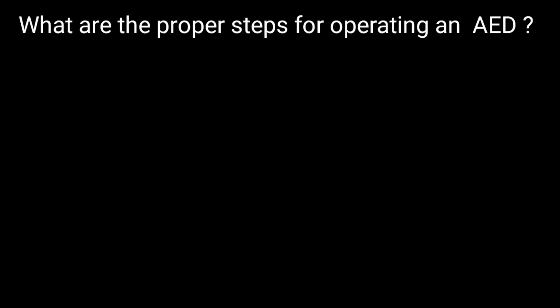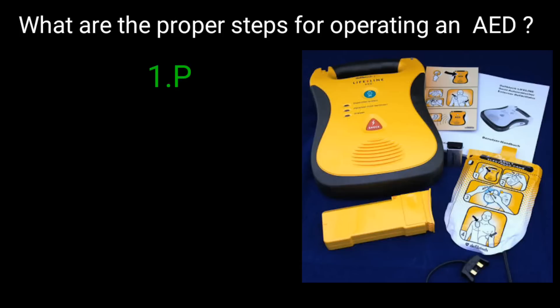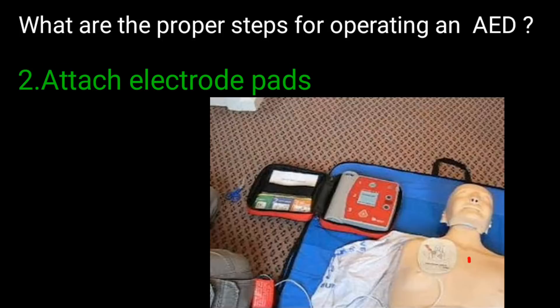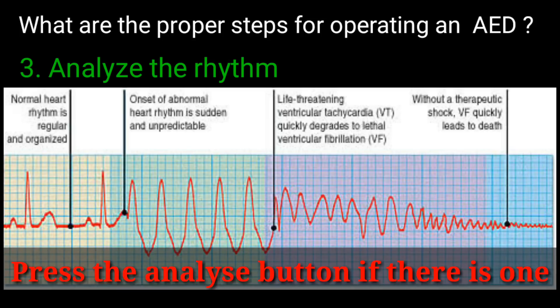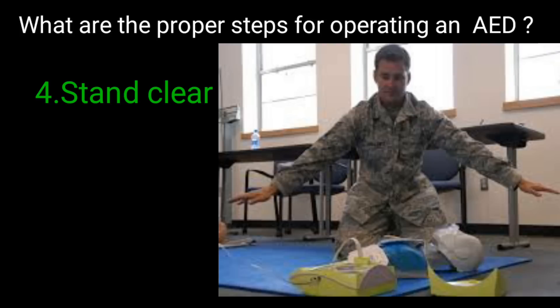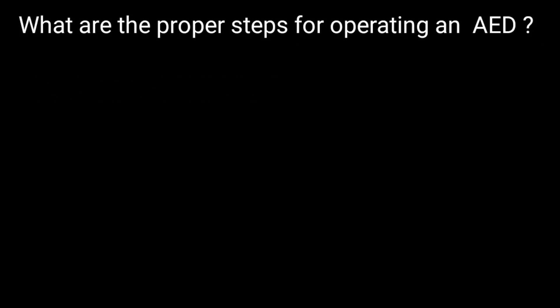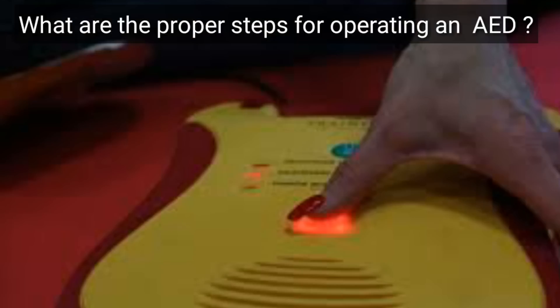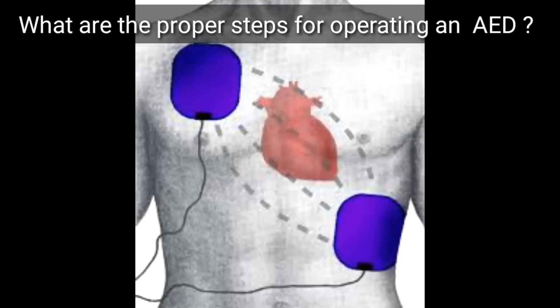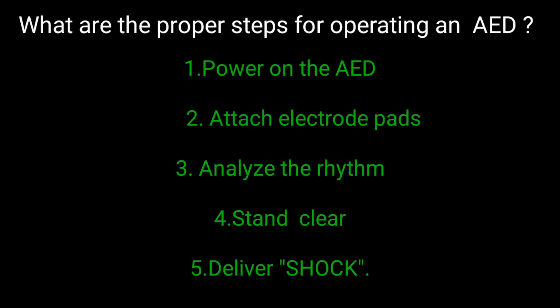What are the proper steps for operating an automated external defibrillator? Power on the AED. Attach electrode pads. Analyze the rhythm. Stand clear. Shock advised. Push to shock. The proper steps are: power on the AED, attach electrode pads, analyze the rhythm, stand clear, and deliver shock.